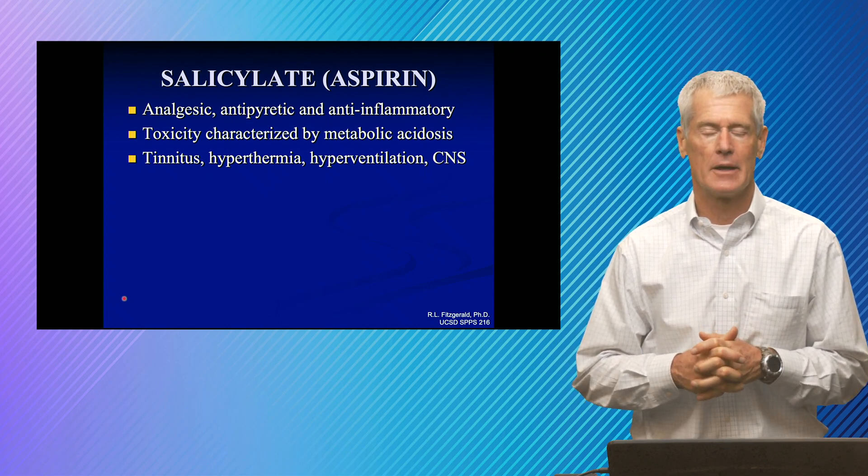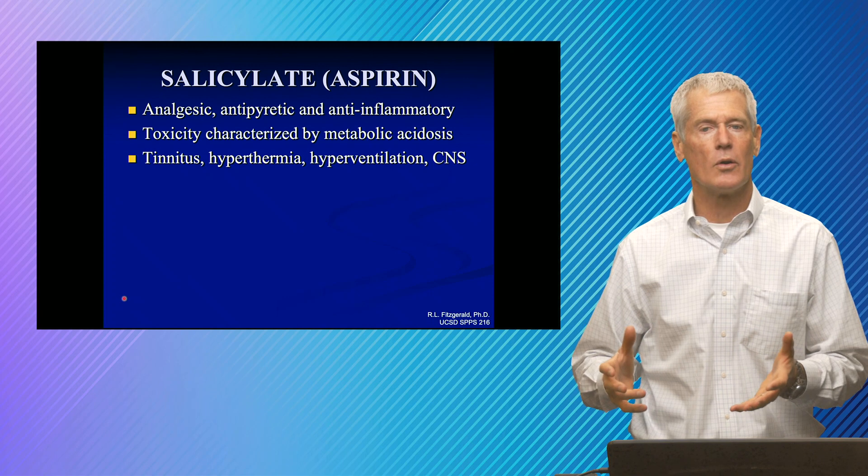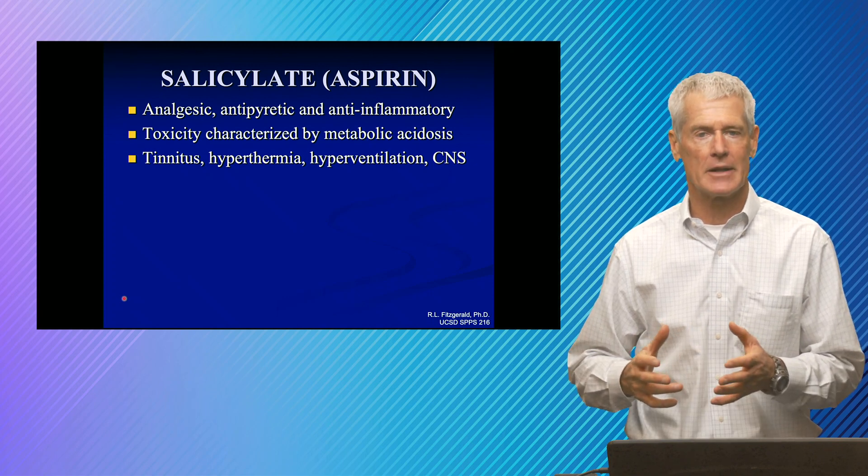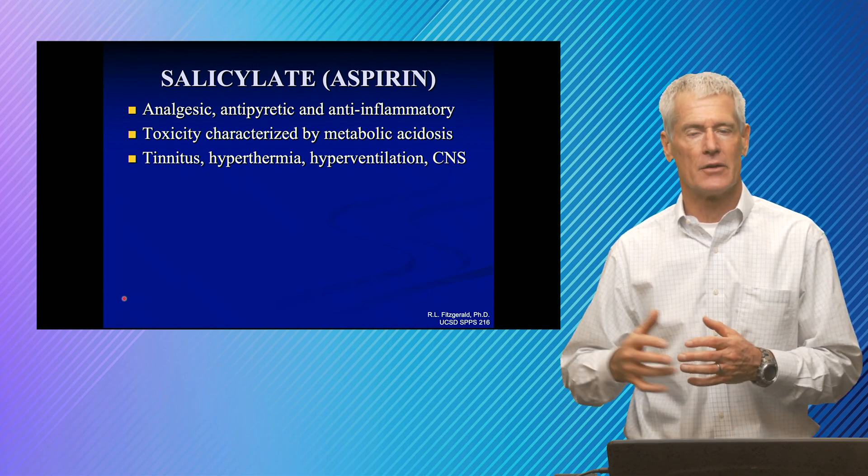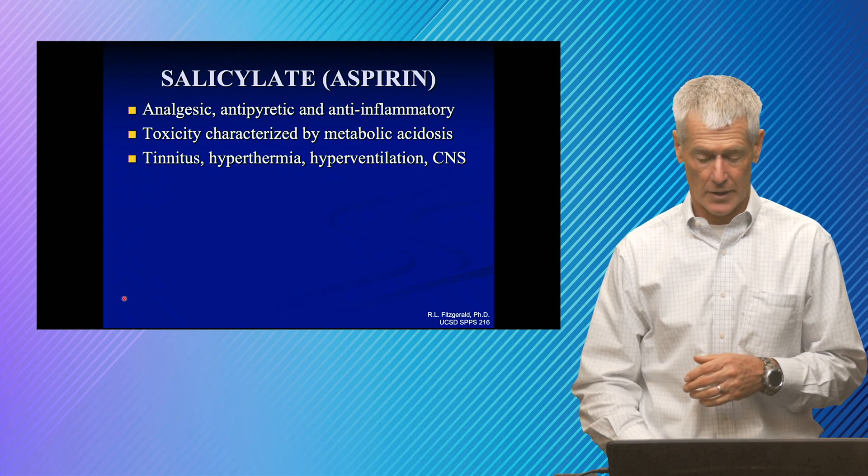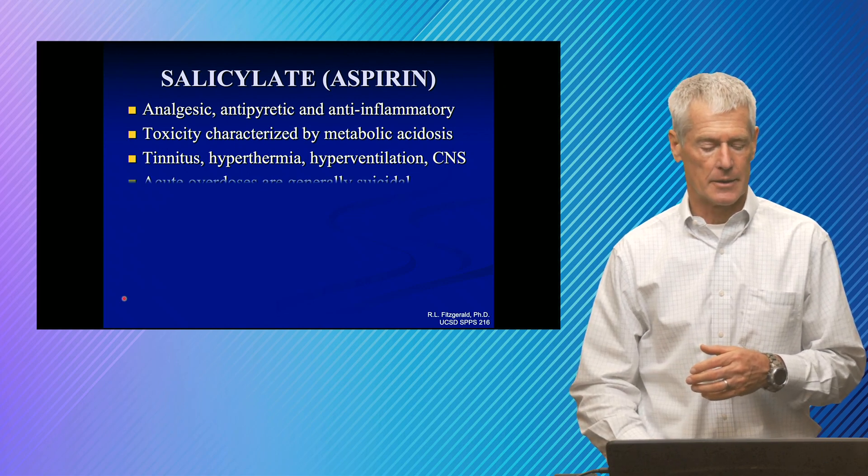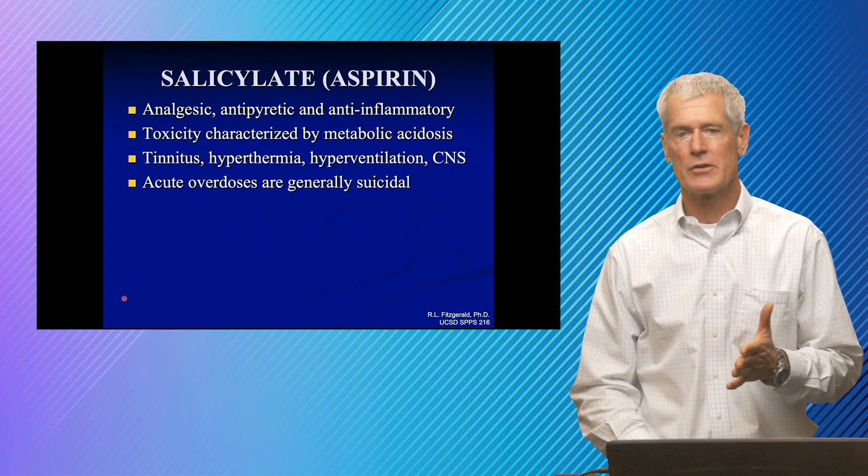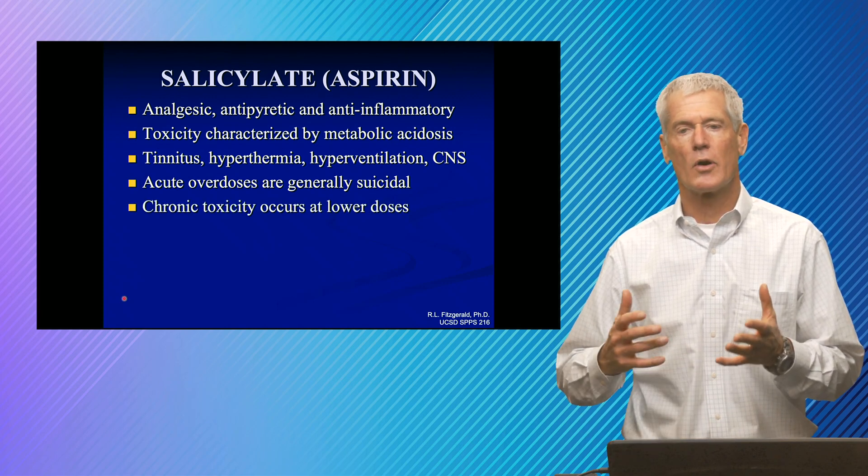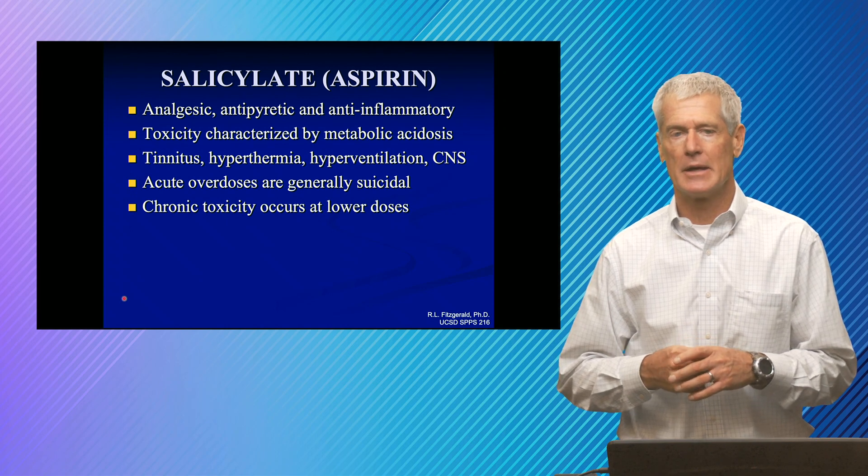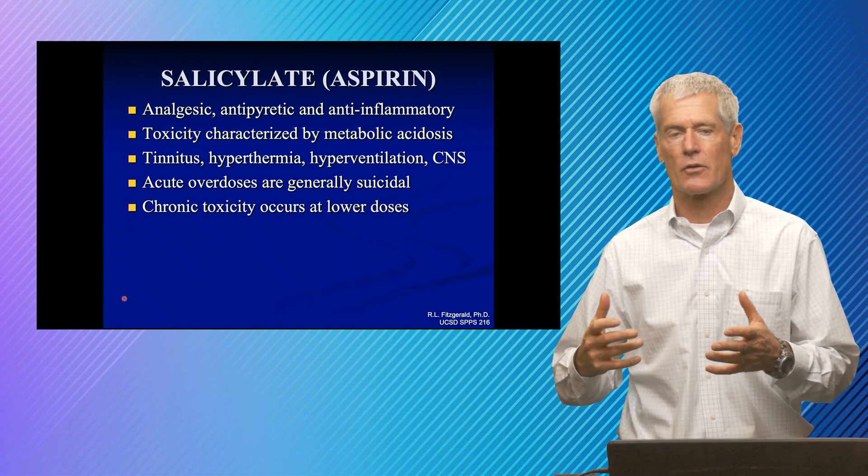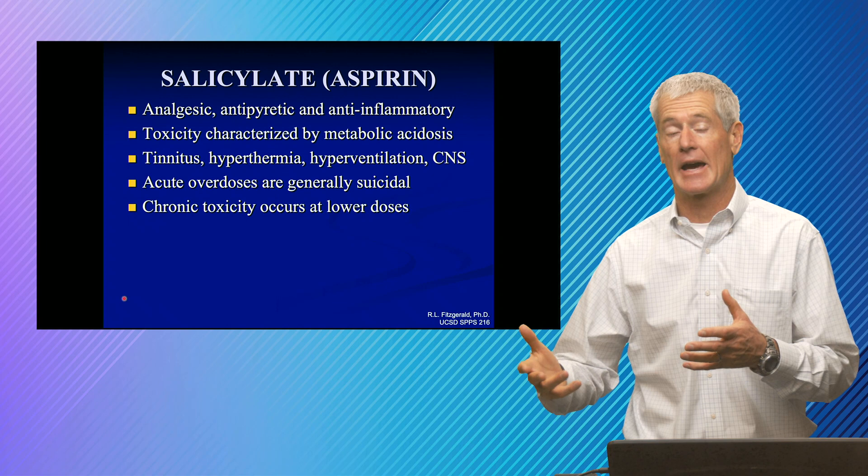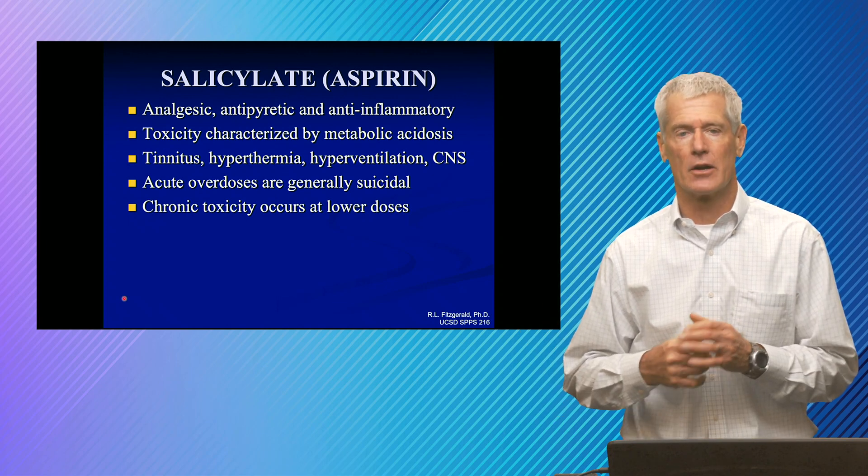Patients become hyperthermic. At some points early on, particularly, they hyperventilate. Later on, they get CNS depression and their breathing slows down. Generally suicidal for acute overdoses. Sometimes patients get into trouble if they're chronically on aspirin, because the toxicity of chronic dosing is at actually lower concentrations than acute toxicity.